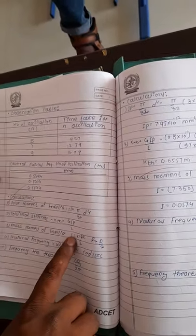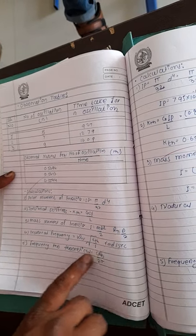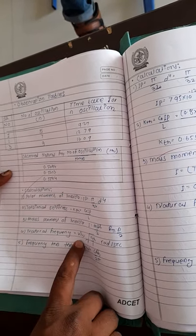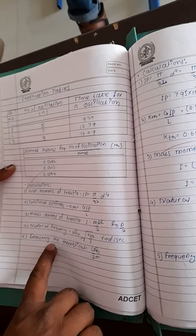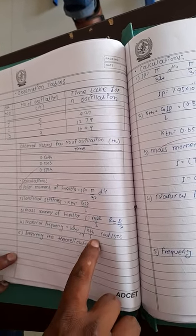Then mass moment of inertia, I = mr²/2, then natural frequency ωn = √(K theoretical / I), and frequency theoretically ωn / 2π in hertz.